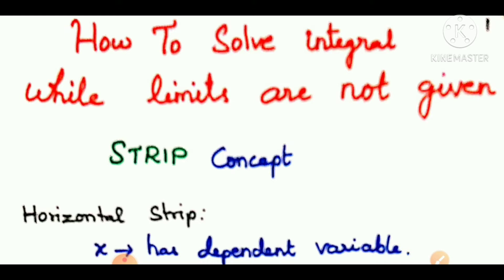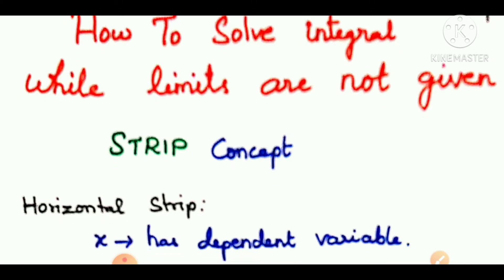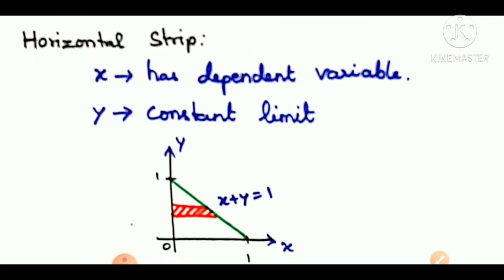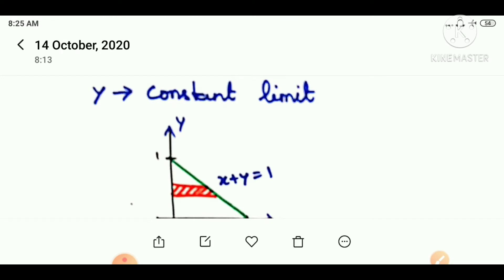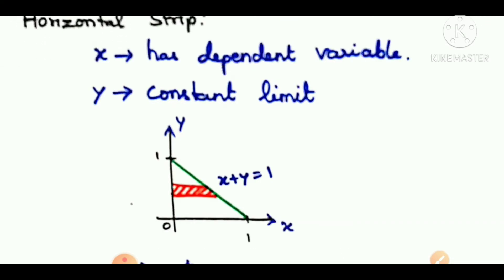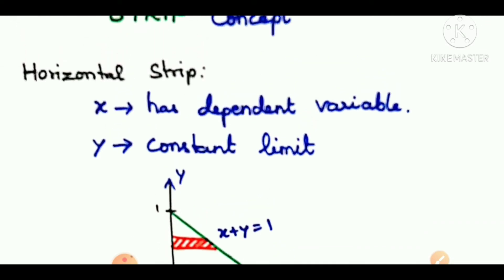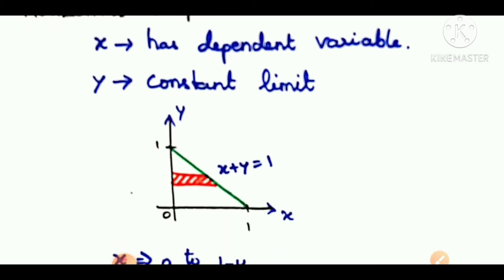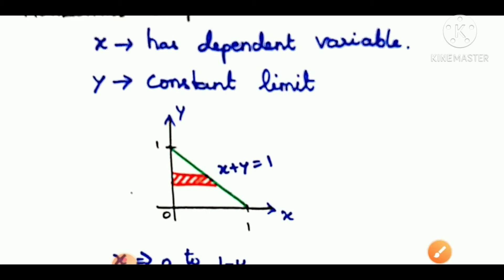Let's talk about the strip concept. If we talk about a graph, we will consider a strip. There are two types: horizontal strip and vertical strip. If we talk about horizontal strip, this is the horizontal strip.